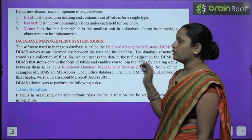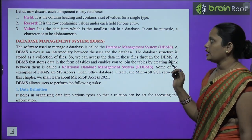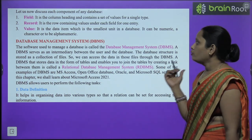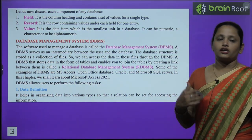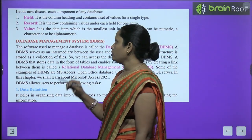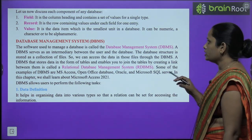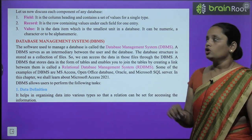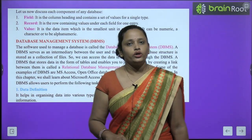Let's discuss some components of any database. First is field — a field is a column that is a heading and contains values for a single type. Record — it is a row containing values, ek entry ke liye har ek field mein. Phir aata hai value — it is a data item which is the smallest unit, and it can be numeric, character, or alphanumeric. Toh numbers, characters, aur alphabet aur numeric dono hi use kar sakte hain.